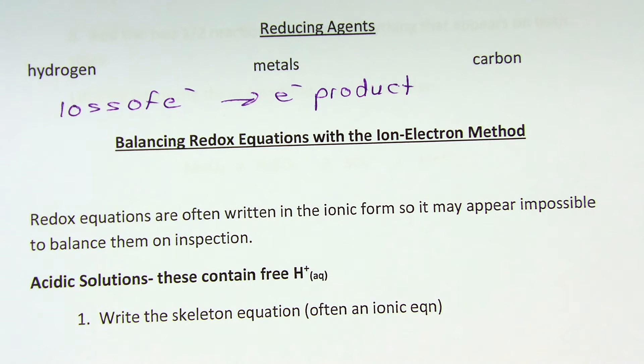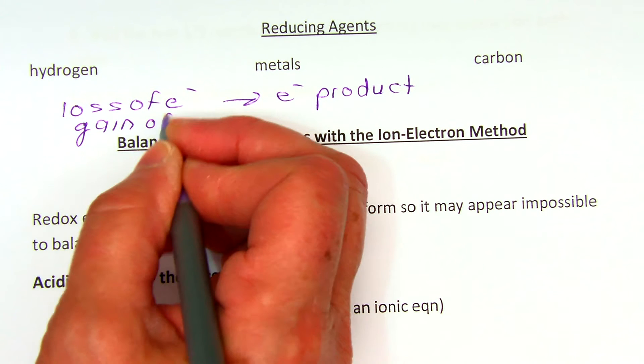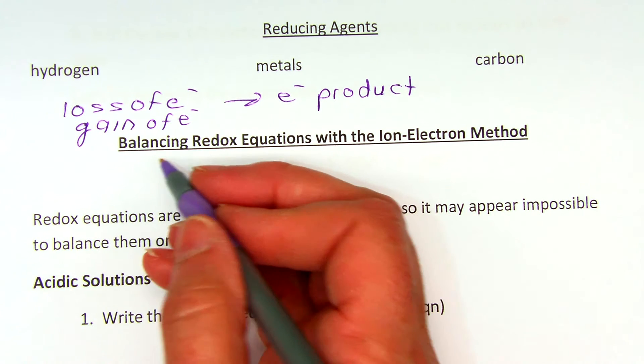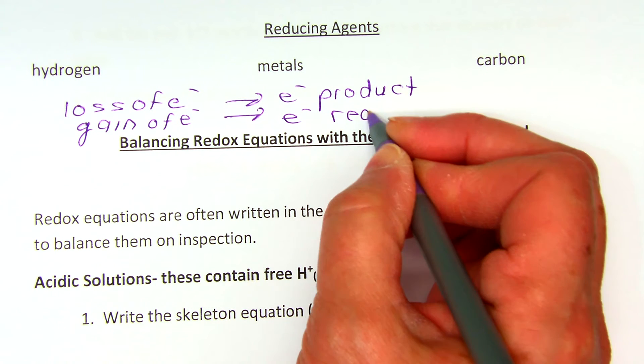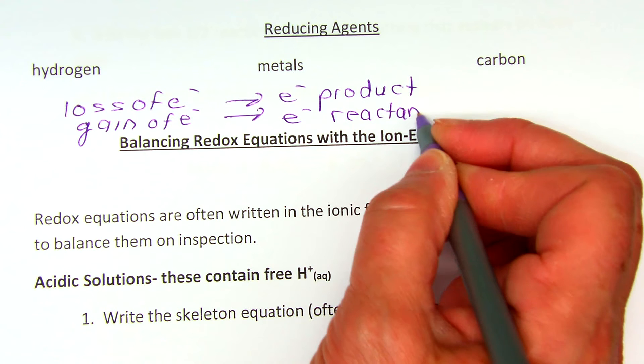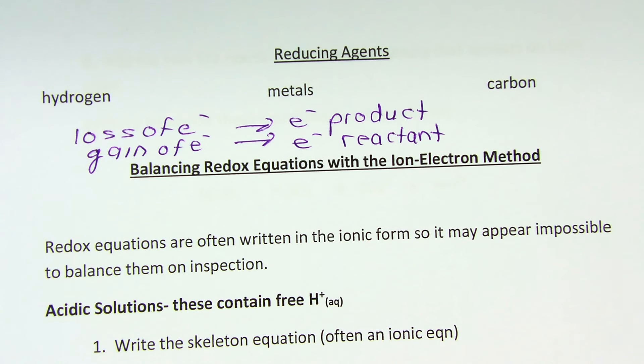When we're gaining electrons, that's reduction, and the electrons then are a reactant, so they're on the reactant side. We're going to see this as we go through the method for balancing redox equations with the ion-electron method.